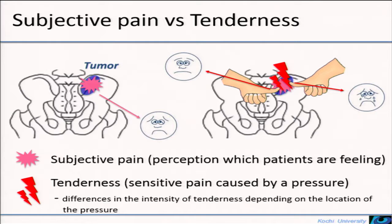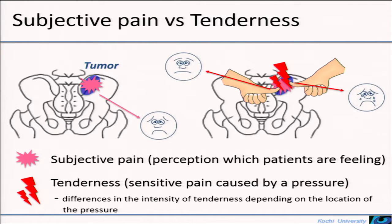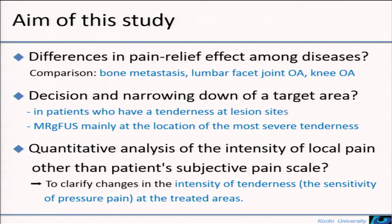The illustration shows the difference between subjective pain and tenderness. Subjective pain is the perception which patients are feeling. Tenderness is sensitive pain caused by pressure. There are differences in the intensity of tenderness depending on the location of the pressure. The aim of this study is to enhance the effect of ultrasound therapy more effectively.